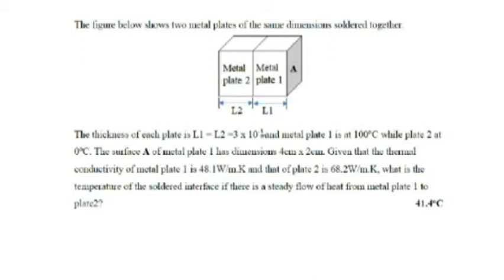The question shows two metal plates of the same dimensions placed together — metal plate 1 and metal plate 2. The thickness of each plate is L1 equal to L2, equal to 3 times 10 to the power negative 3. Metal plate 1 is at 100 degrees Celsius, metal plate 2 is at 0 degrees Celsius. The surface area has dimensions 4 centimeters by 2 centimeters. The thermal conductivity of plate 1 is 48.1 watts per meter per Kelvin, and plate 2 is 68.2 watts per meter per Kelvin. What is the temperature of the solid interface if there is a steady flow of heat from metal plate 1 to metal plate 2?